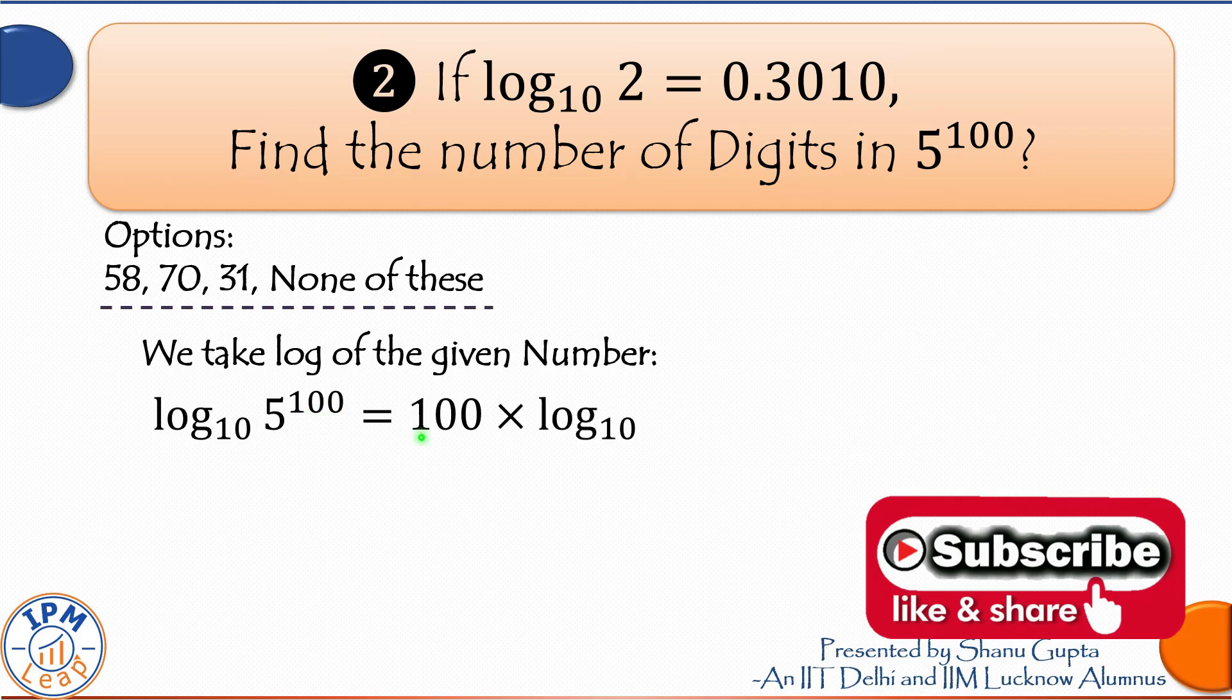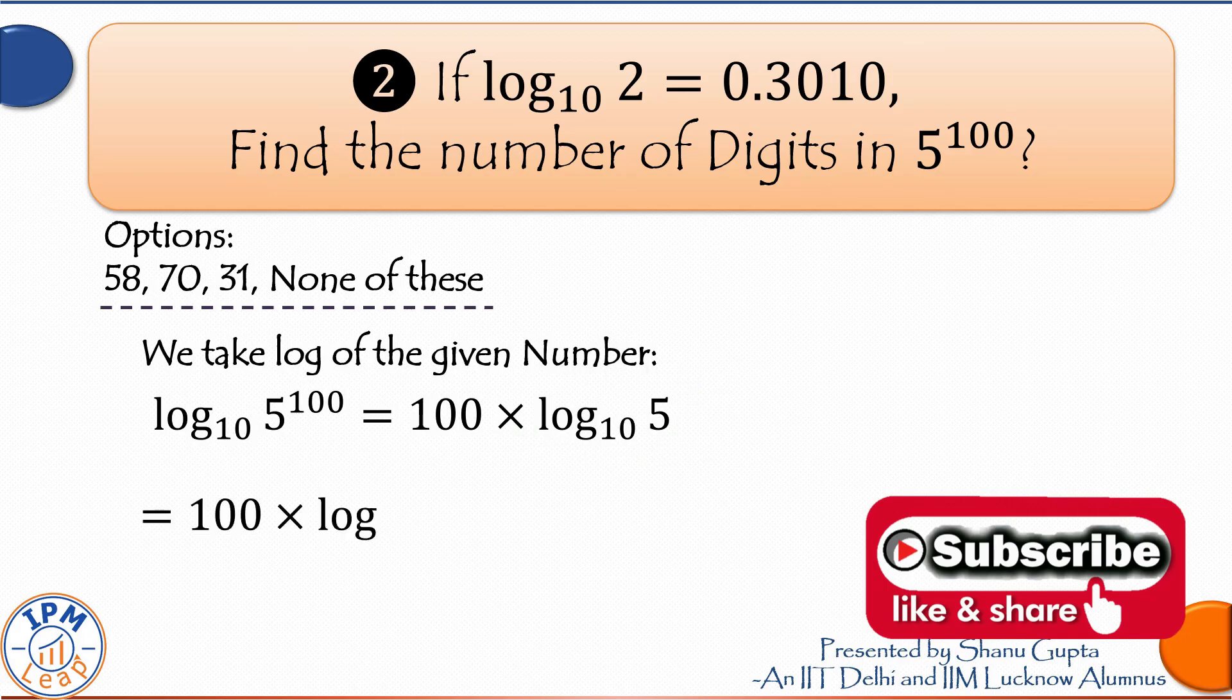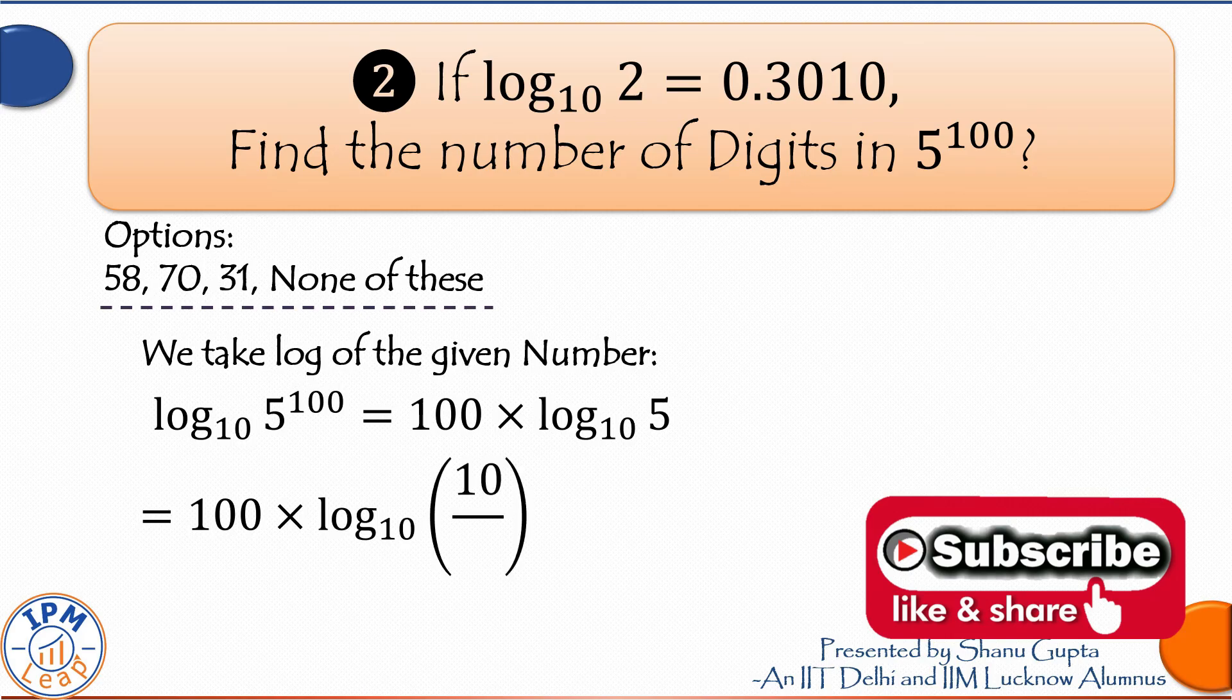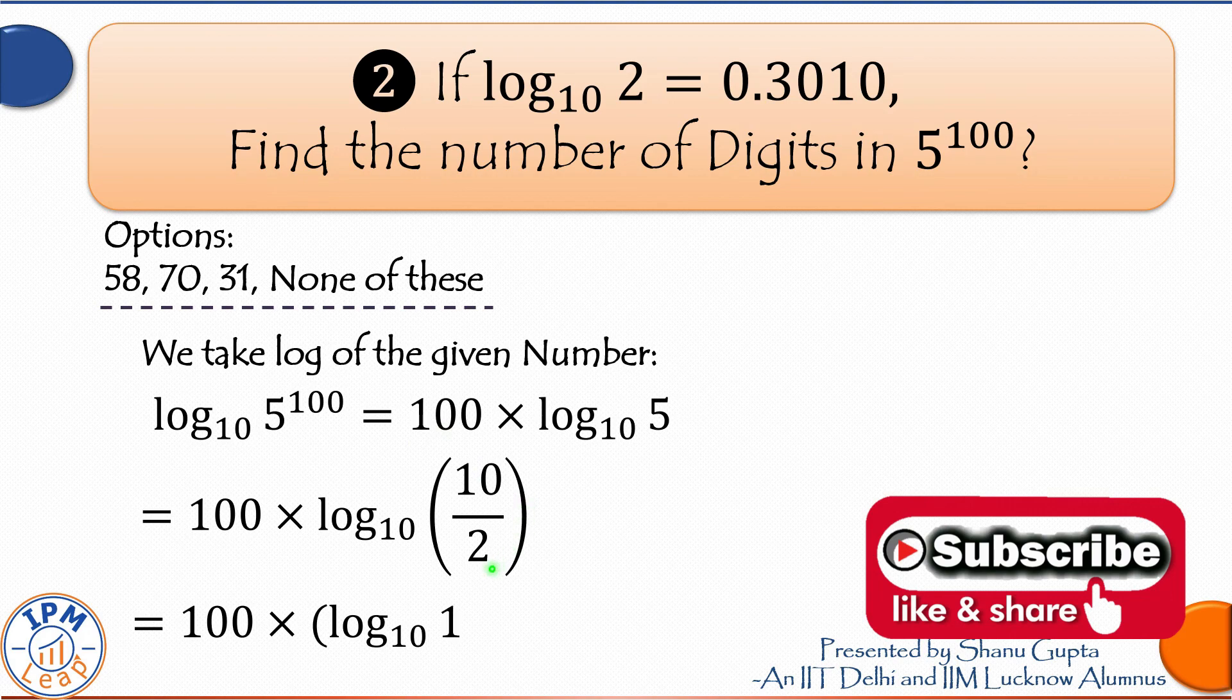Here we need log 5, but they have only given us log 2. So how do we calculate log 5? Okay, so 5 can always be expressed in terms of 10 and 2. We write 5 as 10 over 2 and log of 10 over 2 is equal to log of 10 minus log of 2.